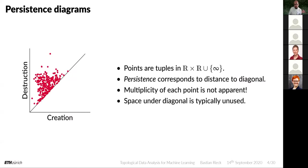If you're familiar with set function learning, you might think this is a perfect example for a descriptor that can be put into a set function — and I agree. But it turns out this is not so easy to feed into a modern machine learning algorithm because the persistence diagram can have a different cardinality. The number of features can vary, so it doesn't give rise to a simple fixed-size feature vector.